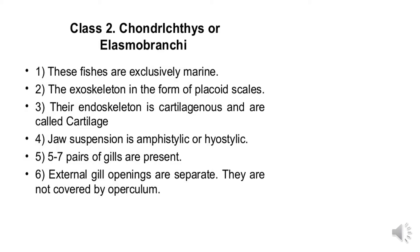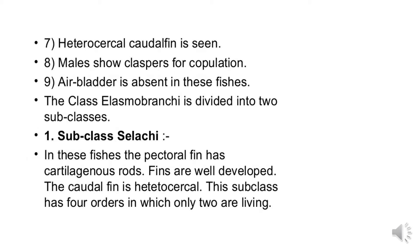There are 5–7 pairs of gills present, with external gill openings that are separate and not covered by an operculum. The caudal fin is heterocercal, meaning it has two unequal lobes. The male clasper organ is used in reproduction. Air bladder is absent in these species. Class Elasmobranchii is further divided into two subclasses.